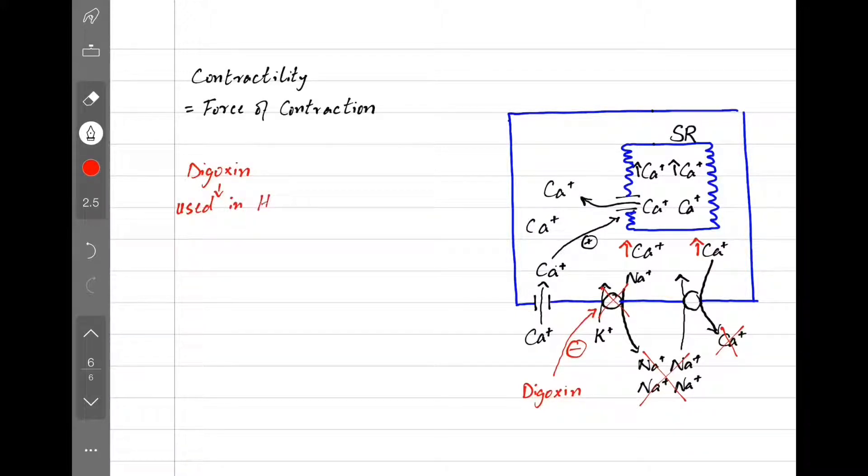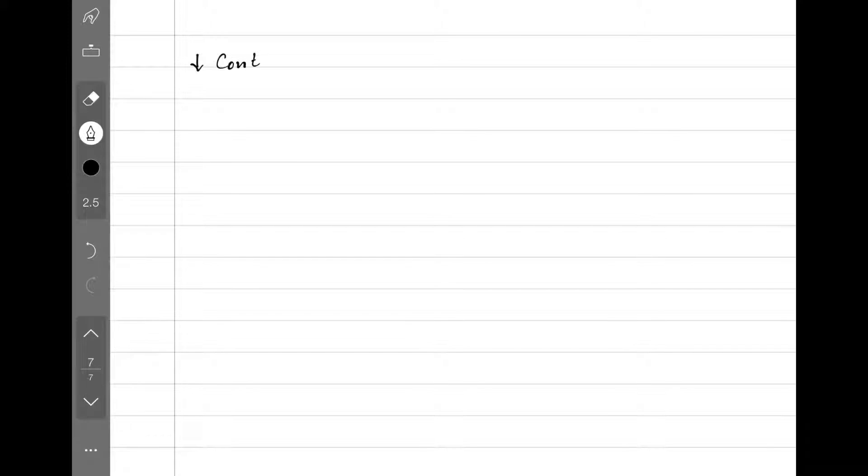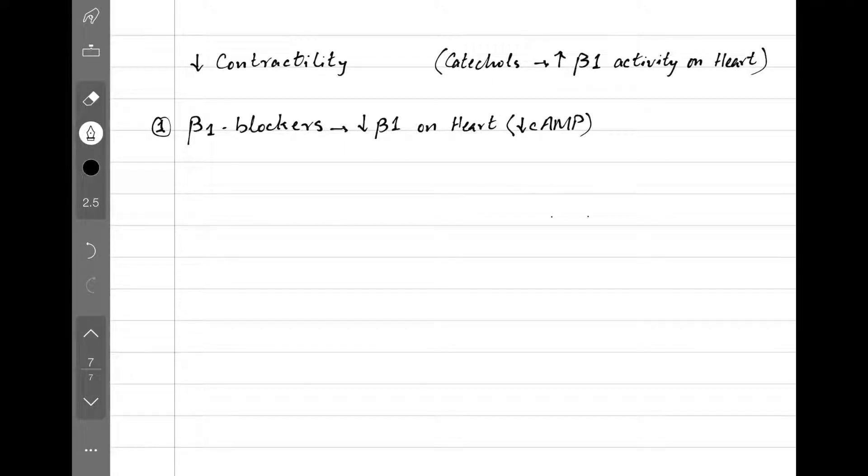There are things that decrease contractility, but keep in mind that catecholamines do all the things we discussed earlier by activating beta-1 receptors on heart. So if we use beta-1 blockers, beta-1 activity, levels of cyclic AMP, and contractility will go down. Remember, beta-1 receptors work by generating cyclic AMP. If beta-1 goes down, cyclic AMP levels also go down. In systolic heart failure, cardiac muscle can't contract, so the contraction force is weak.